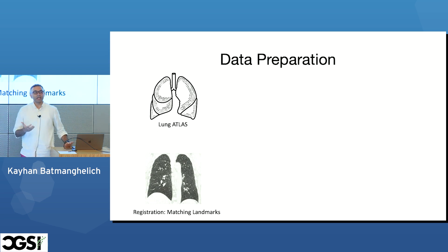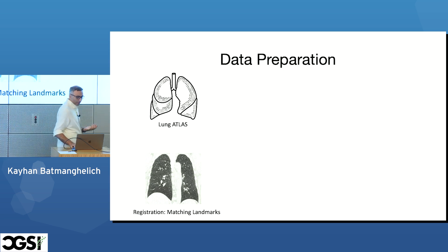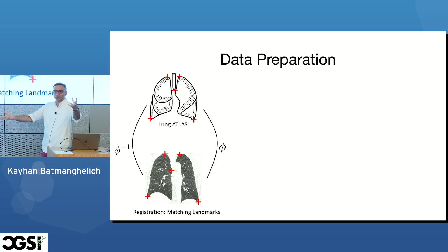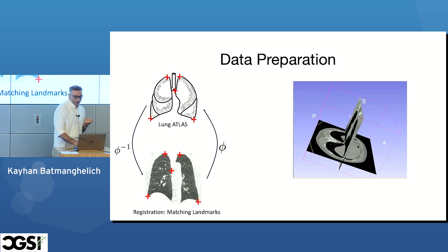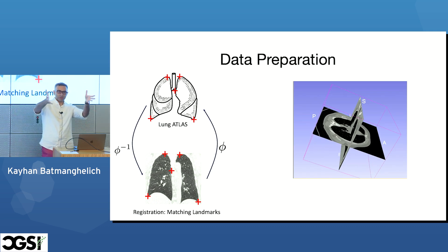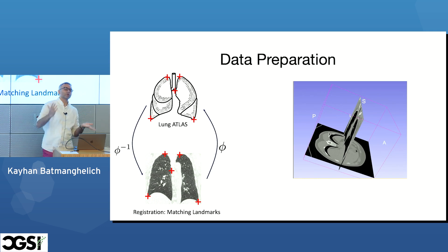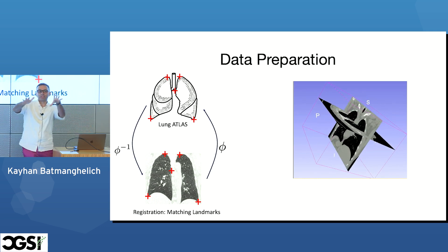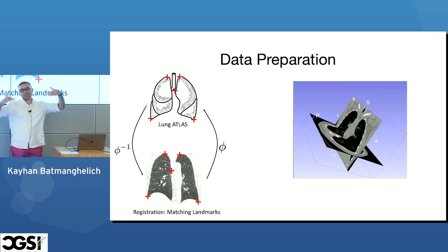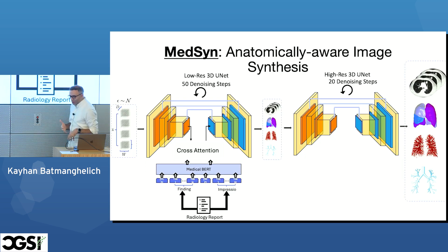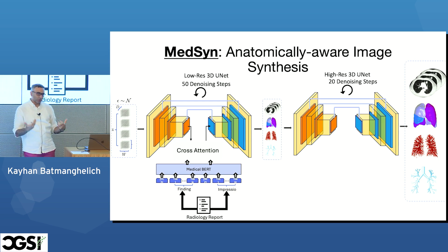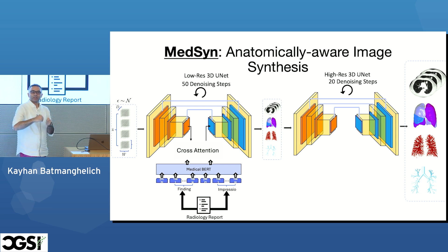To build such a model, attention must be paid to every step including pre-processing. One important step is registering images to an anatomical atlas, which substantially reduces data variance — when all images are aligned to the atlas, the model knows roughly what organ to expect on each slice. We also use a multi-resolution approach that generates not only images but also anatomical landmarks as a skeleton to regulate the reconstruction.